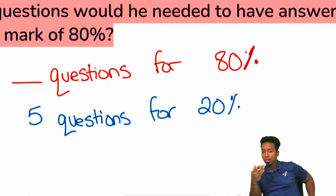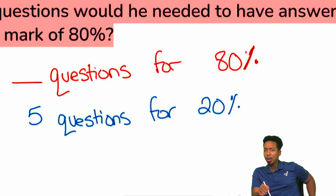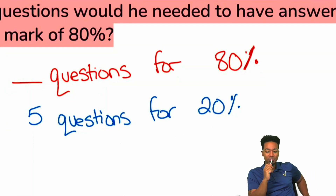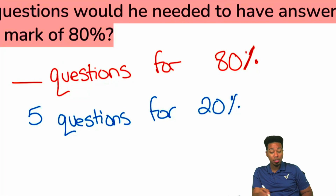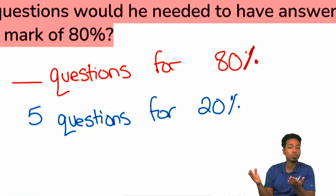Do we see how we're making comparisons? On one hand at the top: blank questions — that's 80%. Here we see five questions — that's 20%. Do we see the comparison between the number of questions correct and the percent correct? Do we see that relationship? As long as we're comparing the same things — the number of questions that corresponds to the percent correct — as long as you see that you're comparing the same things in the same way, you can set up a proportion and you're good.